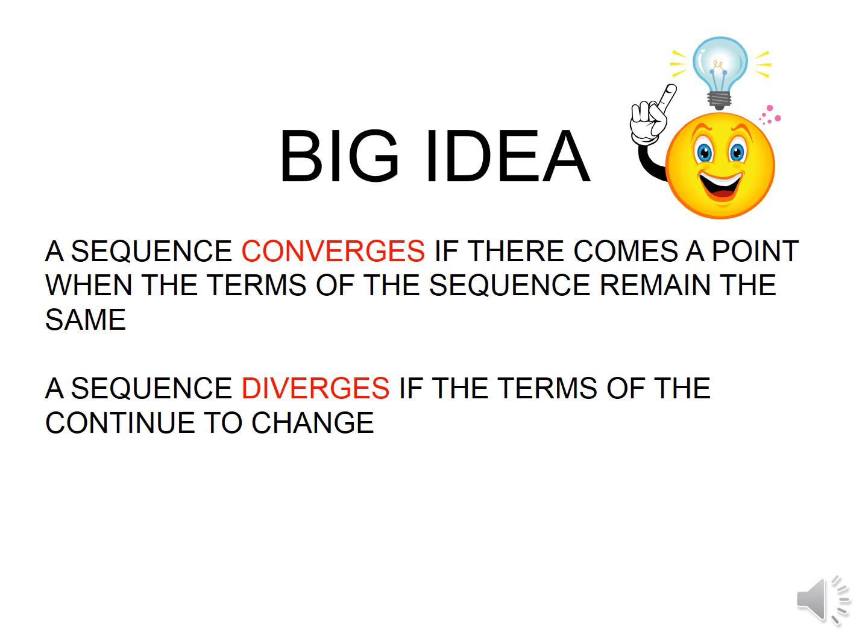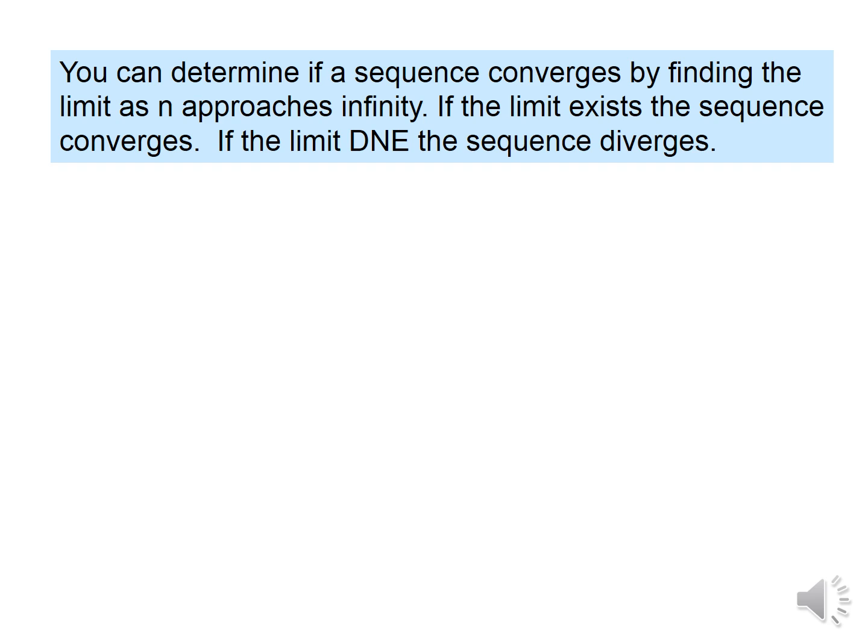Here's a big idea for this section: a sequence will converge if there comes a point when the terms of the sequence remain the same. In other words, if we take the limit as n approaches infinity and the sequence has a finite number, then the sequence is said to converge. If we take the limit and it does not exist or it goes towards infinity, then the sequence is said to diverge. To determine if a sequence converges or diverges, we take the limit: if the limit exists the sequence converges; if the limit does not exist the sequence diverges.